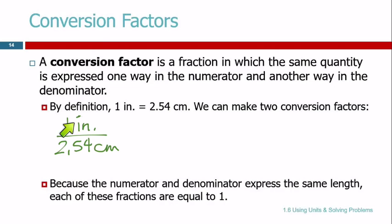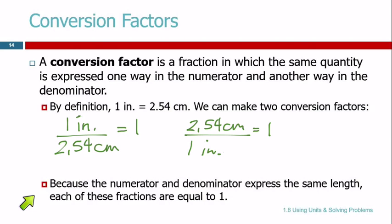The top of this fraction is equal to the bottom of the fraction — they represent the same quantity. What's anything divided by itself? 1. So this conversion factor is equal to 1. It doesn't look like it's equal to 1, but it is, because the top and the bottom are describing exactly the same thing. We could also write it the other way: 2.54 centimeters on the top and 1 inch on the bottom — that's also equal to 1. Conversion factors always numerically equal 1.